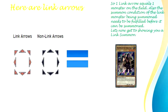Here are Link Arrows. One Link Arrow equals one monster on the field. Also, the summon condition for the Link Monster being summoned needs to be fulfilled before it can be summoned. Let's now get to showing you a Link Summon.